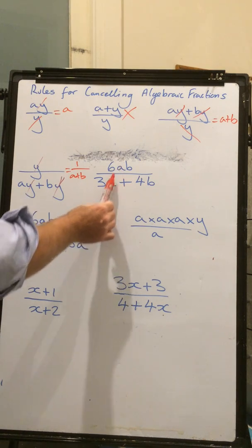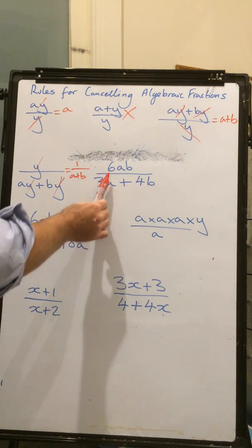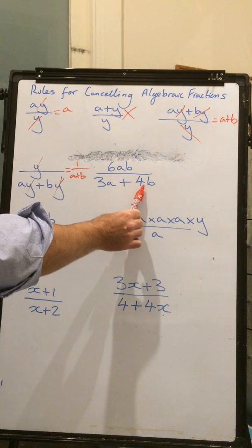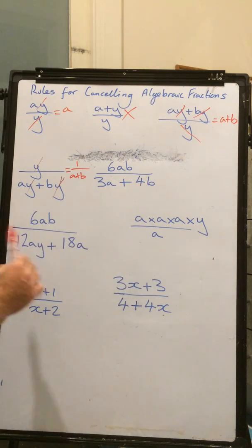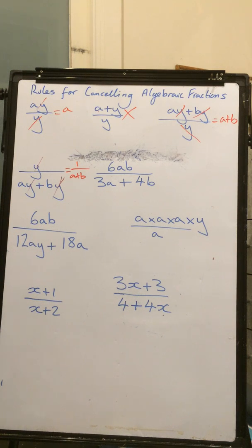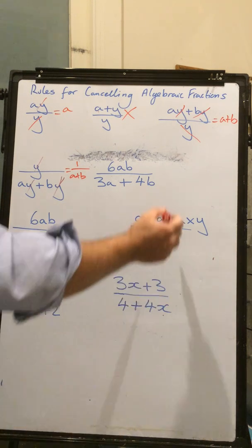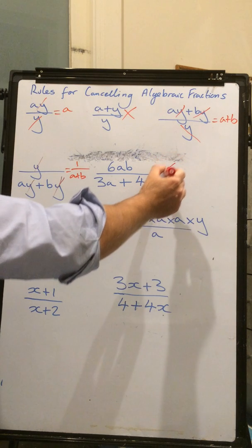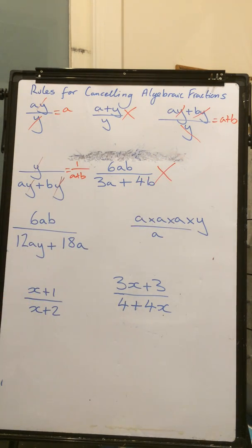Likewise, here, I want to cancel out these two a's. But, for these two a's to cancel out, I need another a in that term there. I want to cancel out these two b's, but I need a b in that term there. So, ultimately, there's not actually anything you can do with this. We just leave this one as it is. You physically cannot do anything with this algebraic fraction.